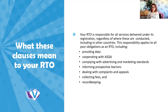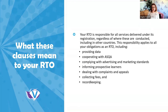What this means for your RTO is you're responsible for the services delivered under that third party agreement. No matter who the third party is — whether they're another RTO or a non-accredited partner — you are responsible for all the third party agreement requirements. That's compliance with the standards, and if you have CRICOS, compliance with the CRICOS national code. This responsibility applies to all your obligations as an RTO, which includes your provision of data to the government and cooperation with ASQA. It needs to be clear in your written agreements that the third party is also responsible for cooperating with ASQA.